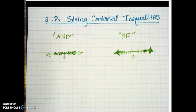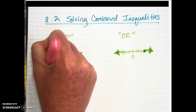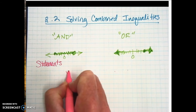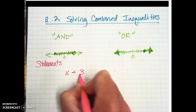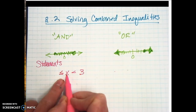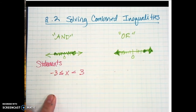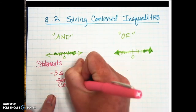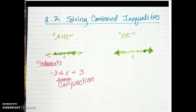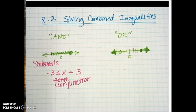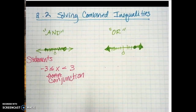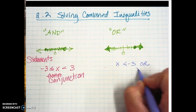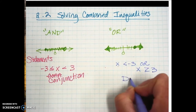That's what they look like graphically, but what do they look like as statements? The AND is what we call a conjunction — it's when your X is in the middle, so you might have X is less than three and X is greater than or equal to negative three. The OR is similar but the parts are separated: X is less than negative three, or X is greater than or equal to positive three. This one is called a disjunction.